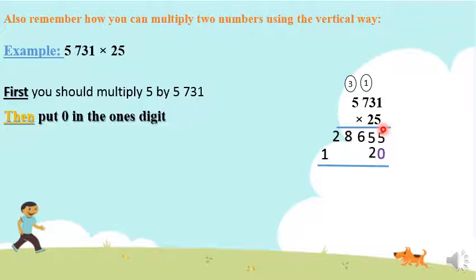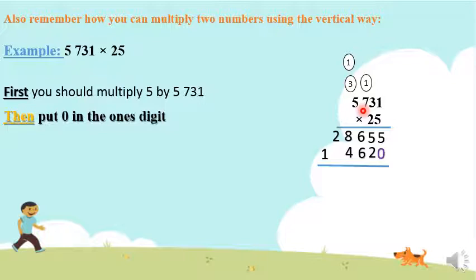Next, we multiply 2 by each digit of the first number. 2 times 1 is 2. 2 times 3 is 6. 2 times 7 is 14 — write 4 and carry 1. 2 times 5 is 10, plus 1 is 11. You can cross out the carry-out numbers from the first result so you will not get confused.